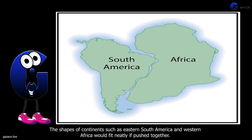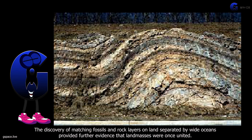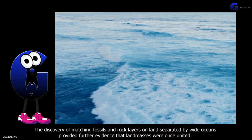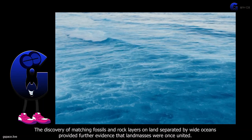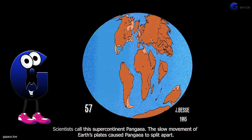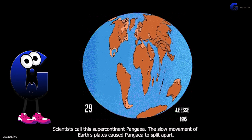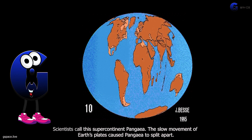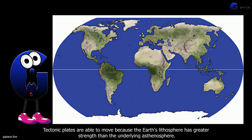The shapes of continents — such as eastern South America and western Africa — would fit neatly if pushed together. The discovery of matching fossils and rock layers on land separated by wide oceans provided further evidence that land masses were once united. Scientists call this supercontinent Pangea, and the slow movement of earth's plates caused Pangea to split apart.